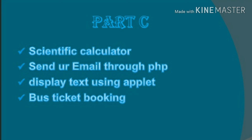Sorry — Part C. The scientific calculator is very important. You can use the third unit or fourth unit. You can use the airline reservation. You can use the app and the program — you can use emoji and paint. You can use text to display. It's easy to use.